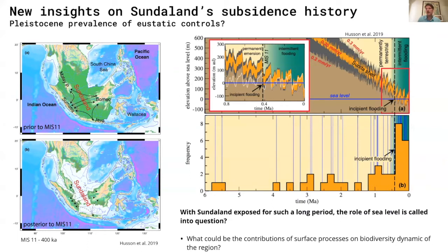However, new findings have challenged this idea and the prevalence of eustatic control, demonstrating that the shelf was subsiding during the late Pleistocene and was permanently subaerial before 400,000 years ago, around MIS 11. These results were presented in three different papers from Antakaris and Laurent, co-authors on this talk, looking at the geodynamic and tectonic evolution of the region during the Pleistocene, and others looking at rift morphology and subsidence rate across the Sunda shelf.